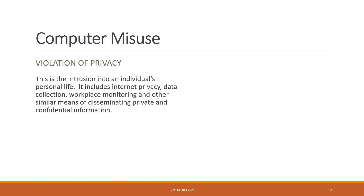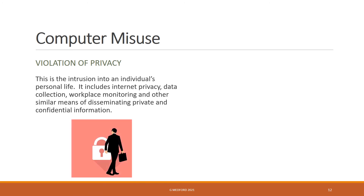Violation of privacy is a form of computer misuse, and this is the intrusion into an individual's personal life. It includes internet privacy, data collection, workplace monitoring, and other similar means of disseminating private and confidential information.